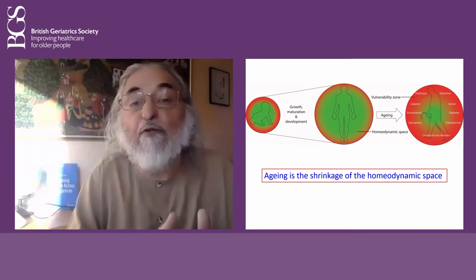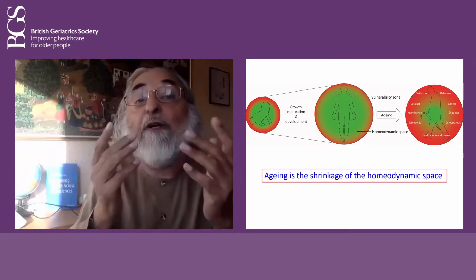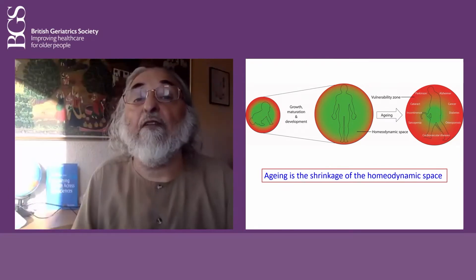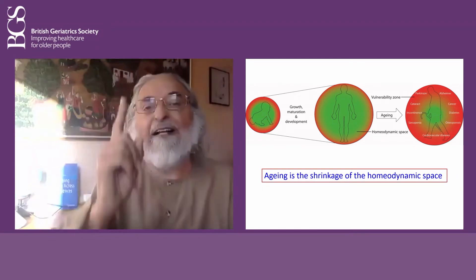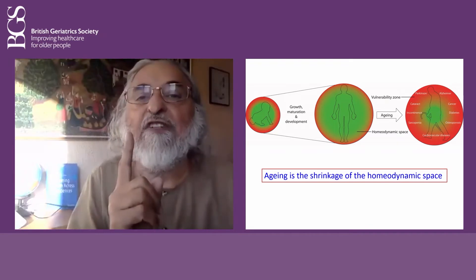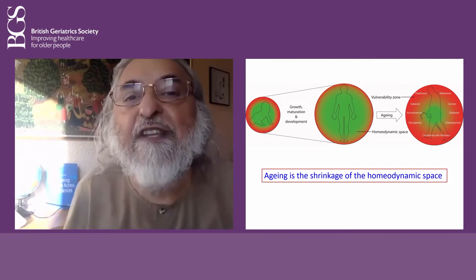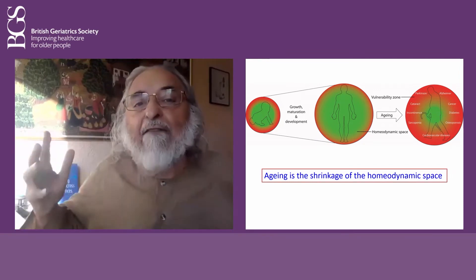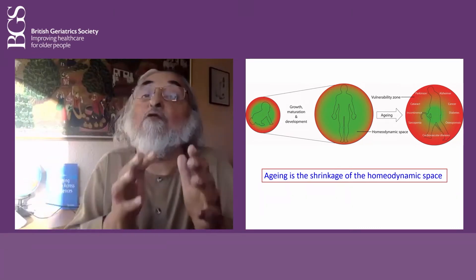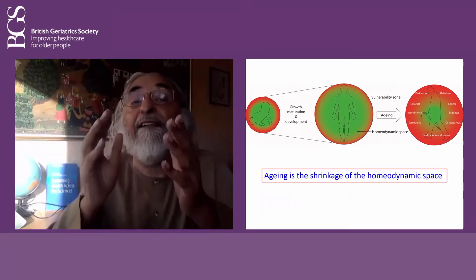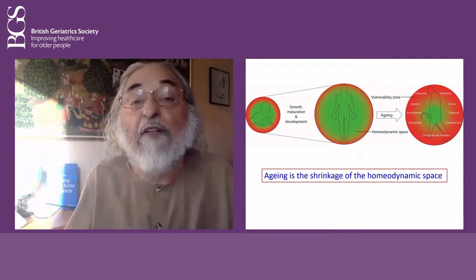This is one way of visualizing aging: old age is the shrinkage of the homeodynamic space. Day-to-day life in old age can be fine, but one strong challenge — who gets killed in COVID times now? Our ability to adapt, remodel, and stress-respond is reduced, so the likelihood of problems and death in the elderly is observed to be very high, even with COVID.